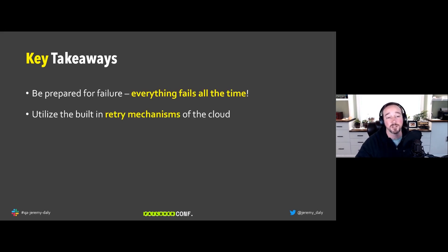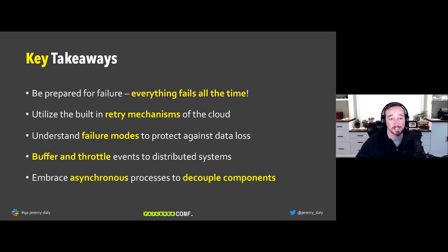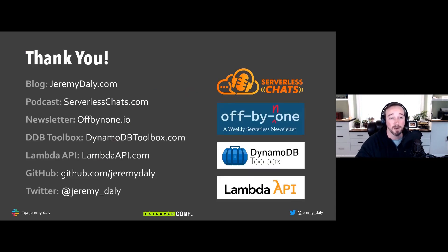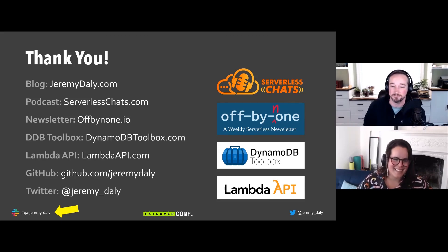Key takeaways: everything fails all the time, so be prepared. Utilize the built-in mechanisms of the cloud — retry mechanisms are much better than anything you can write. Understand those failure modes so you do not lose data. Buffer and throttle events to distributed systems so you don't overwhelm downstream systems. Embrace asynchronous processes to decouple components. Thank you very much — follow me on Twitter, check out my blog, podcast, newsletter, and open source projects.